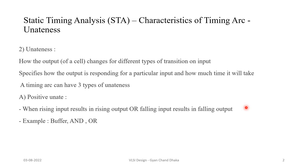Positive uniqueness is whenever there is a rising input transition happening at a cell input and the cell output is also transitioning high, or whenever there is a falling transition happening at the input and the output of the cell is also transitioning low. In other words, rising input results in rising output and falling input results in falling output. Examples are buffer, AND gate, and OR gate.